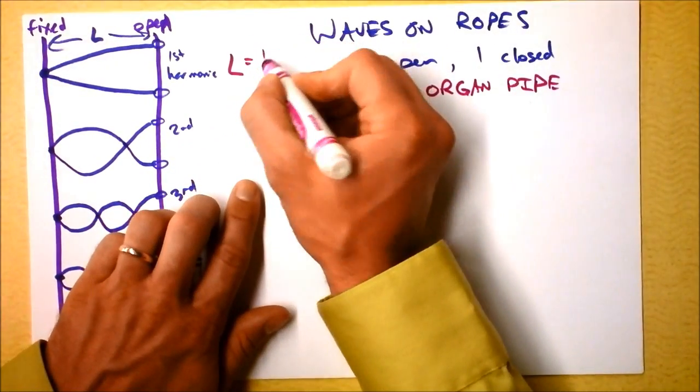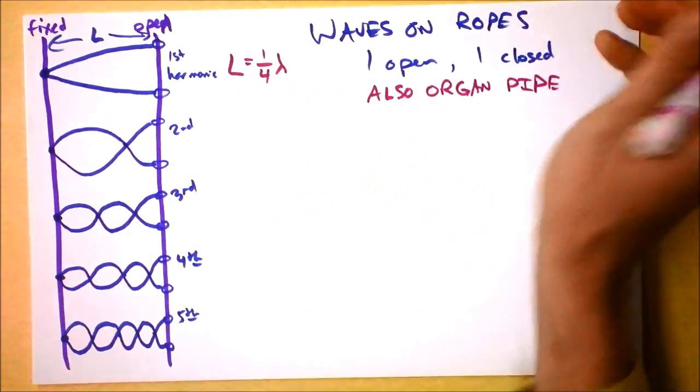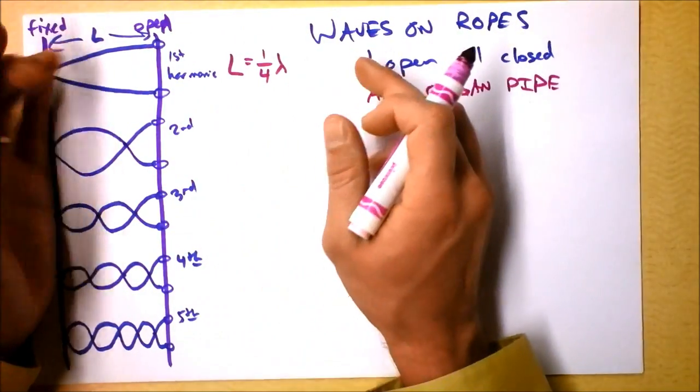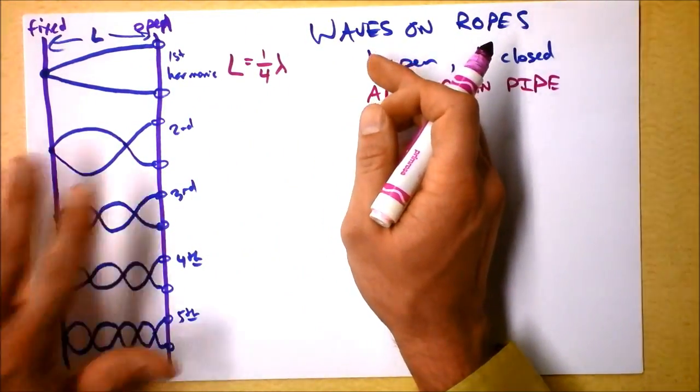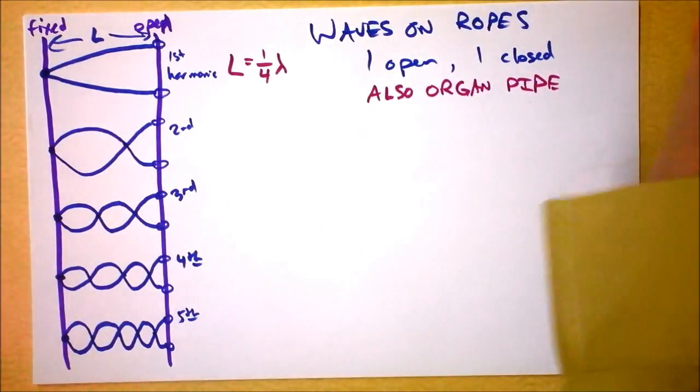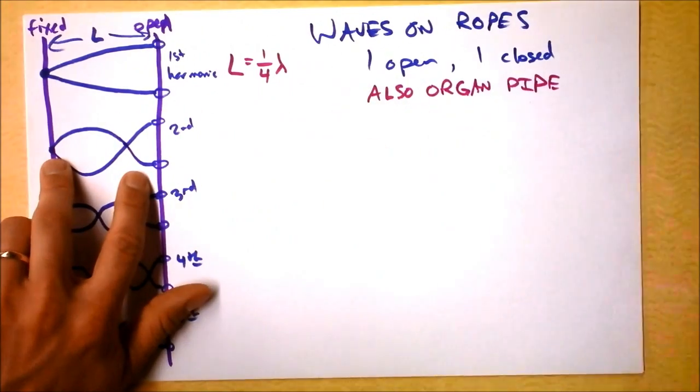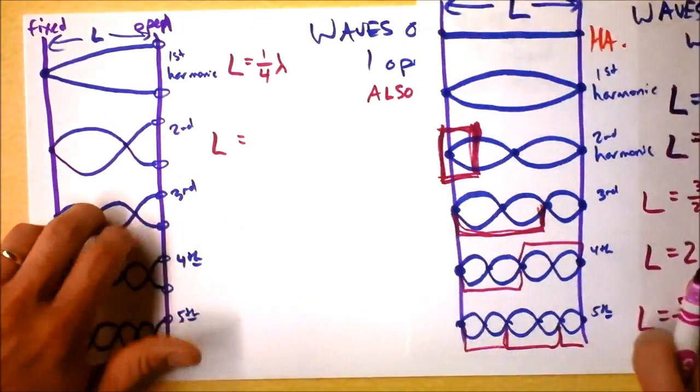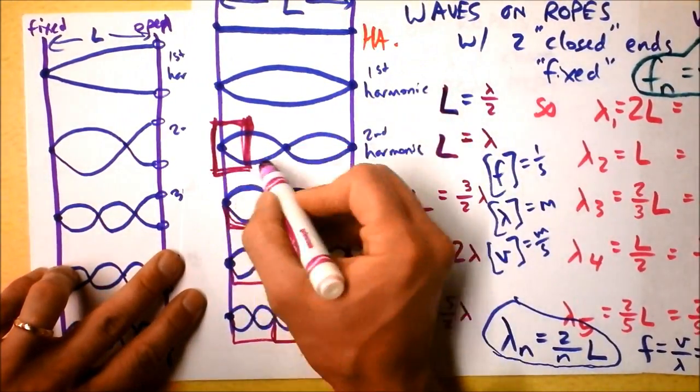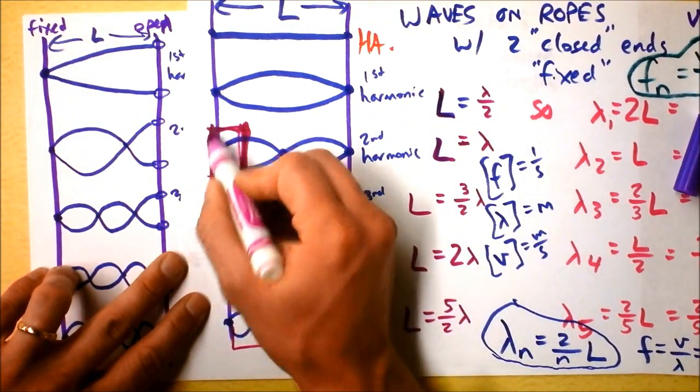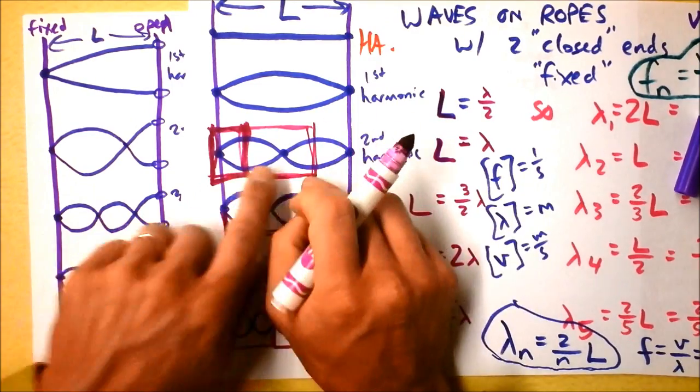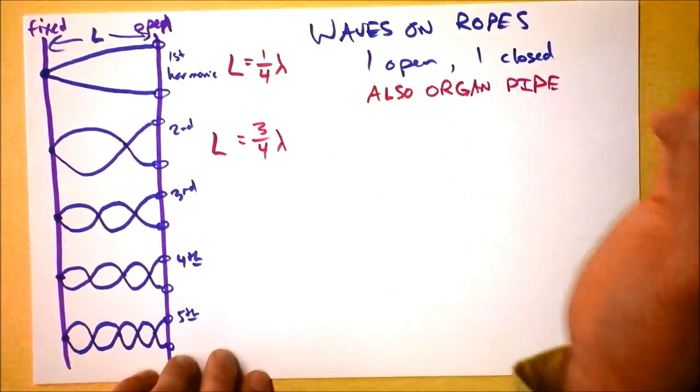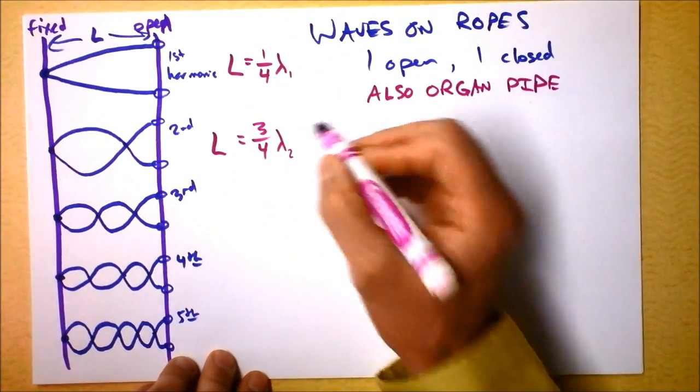And this right here is not even a full wave. So here I can write L equals, well, how much do we have now? Now we've got starting from here and going to here. What fraction of a wave is that? I guess it's three quarters. It's most of a wave, but not the whole thing. And this would be lambda one, this is lambda two.